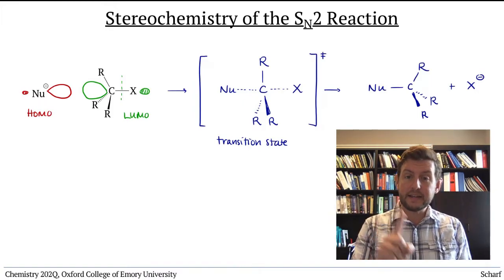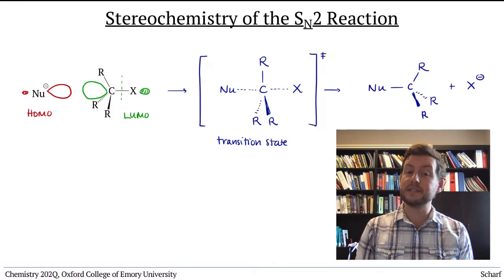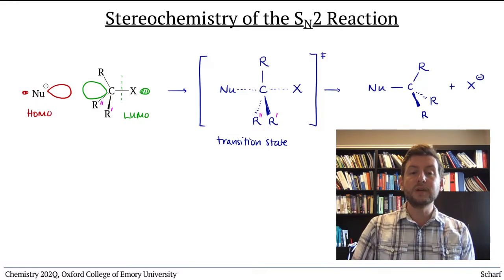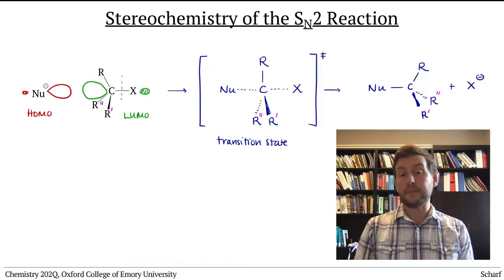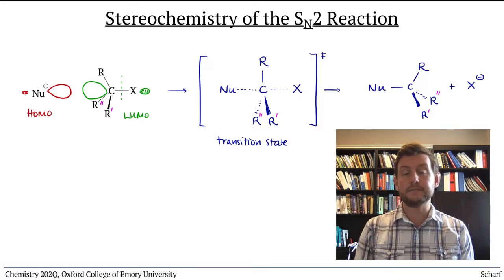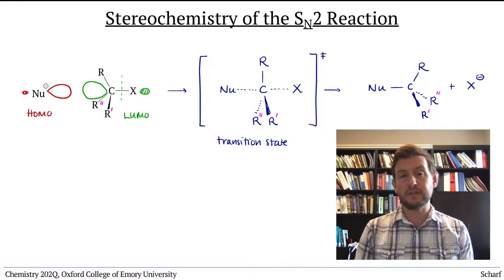But if the leaving group happens to be attached to a stereogenic carbon, sometimes called a chiral center, then an SN2 reaction inverts the stereochemistry at that site, the configuration of that site. We'll explore this in more detail in a future video.